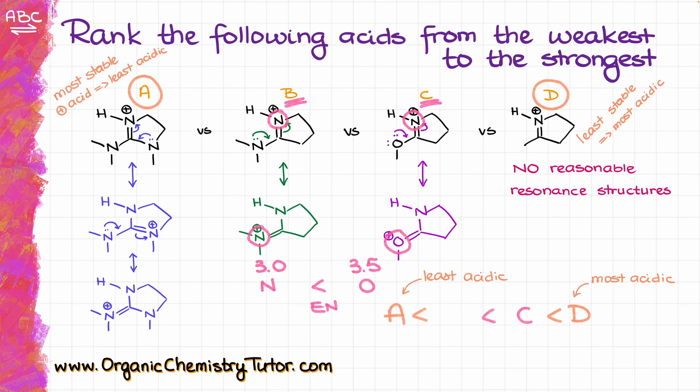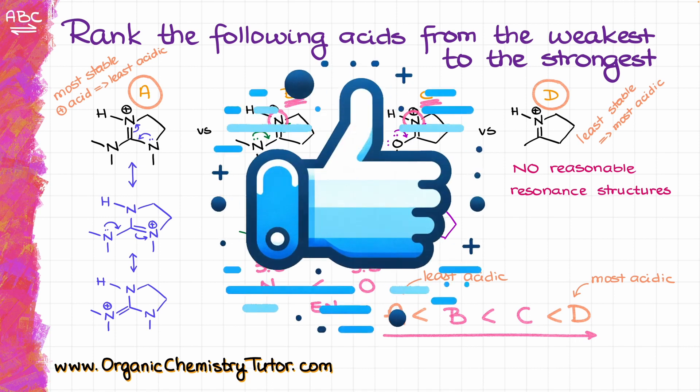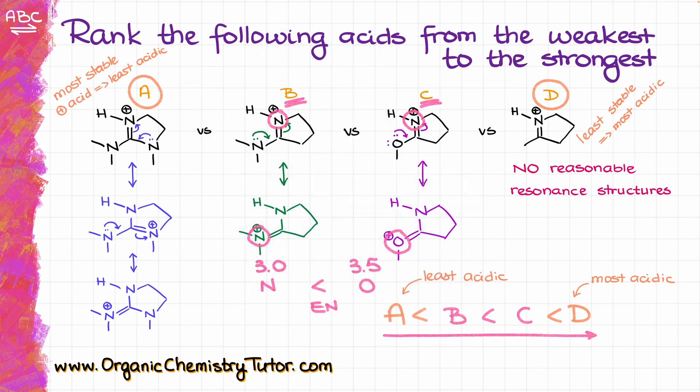Since C is less stable, it is more acidic than B. So molecule B sits right after A, and molecule C comes after B in acidity. It coincidentally turned out that our ranking follows the same order in which the molecules are shown on screen, which is kind of fun. That's all for today — thank you for watching!